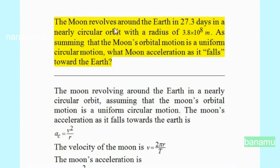The moon revolves around the earth in 27.3 days in a nearly circular orbit with a radius of 3.8 × 10⁸ meters. Assuming that the moon's orbital motion is uniform circular motion, what is the moon's acceleration as it falls towards the earth?